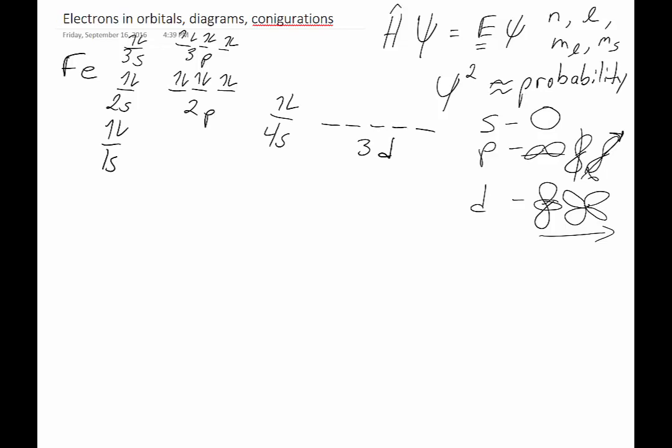When you count over for iron, you see iron is at atomic number 26. The 3d orbitals start with atomic number 21. So iron has 1, 2, 3, 4, 5, 6 electrons. Those go into this orbital as 1, 2, 3, 4, 5, and then 6 pairs up with the first one in the beginning.